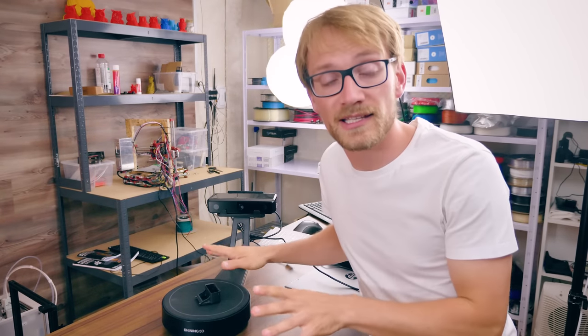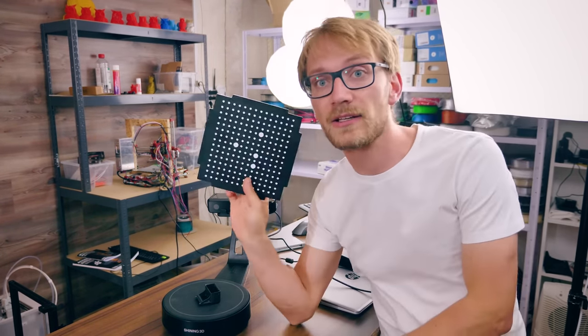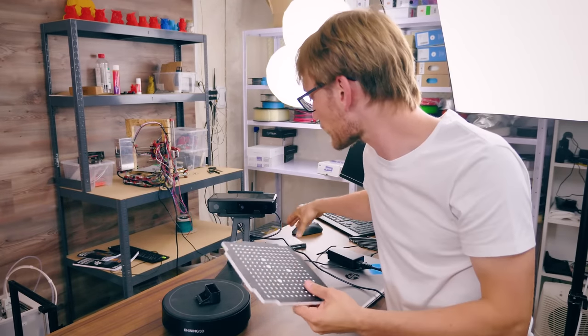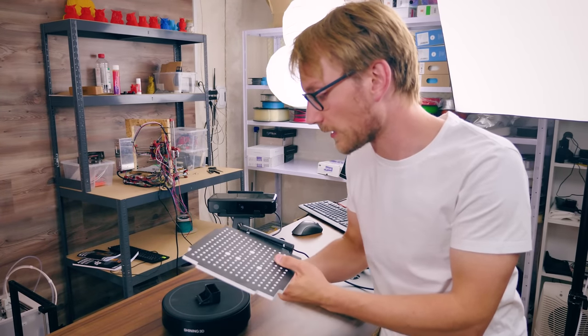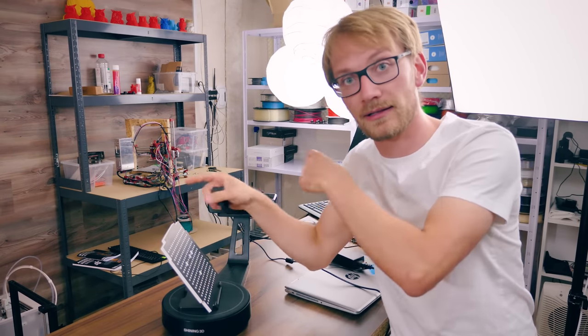So that is the EinScan SE assembled. Now I've not used this for a while so I might actually need to use the calibration pattern. This just goes onto the turntable like so, that sits on here and then it does its auto calibration. You rotate this a few times. It's really quick and simple to do and really you don't need to do it all that often.